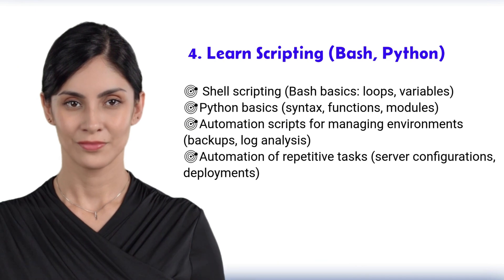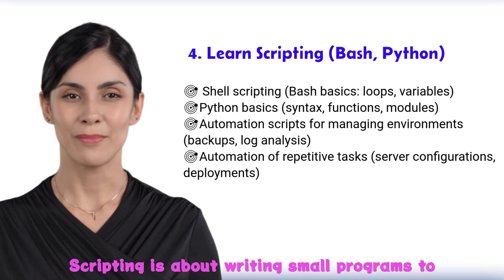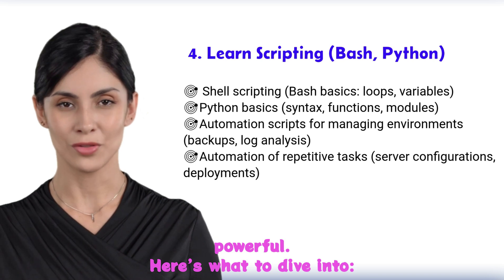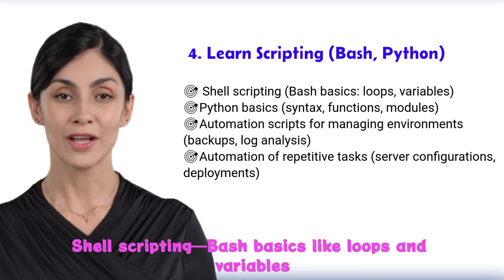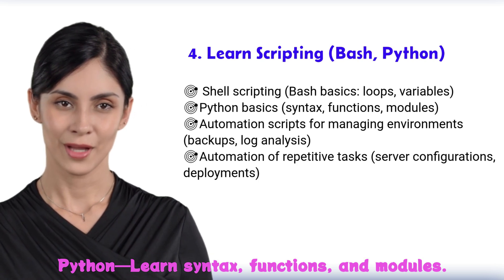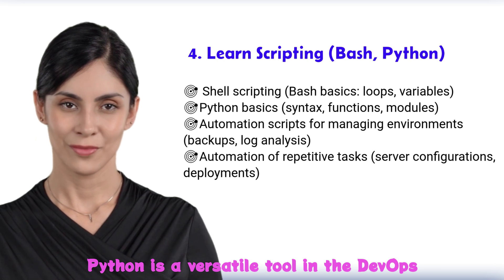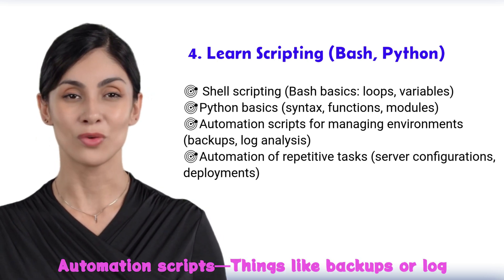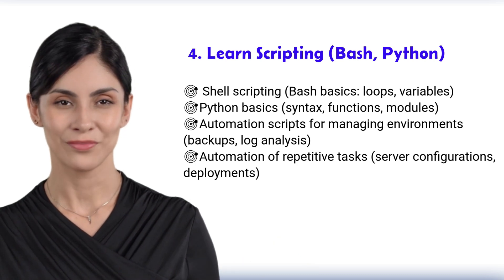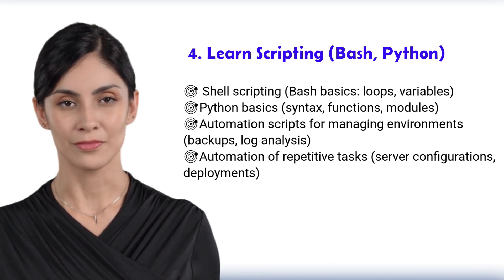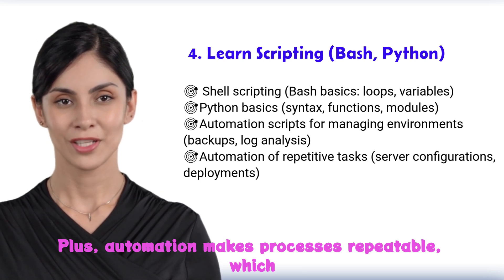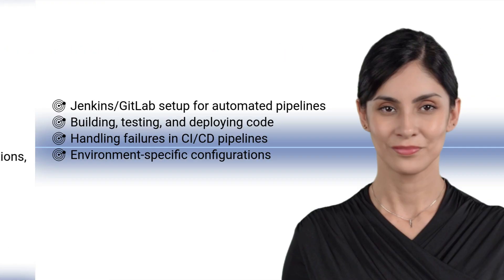Step 4: scripting. Scripting is about writing small programs to automate tasks, and this is where things get really powerful. Learn shell scripting — bash basics like loops and variables will help you automate tasks in Linux. With Python, learn syntax, functions, and modules — it's a versatile tool in the DevOps world. You'll also write automation scripts for things like backups or log analysis, and automate repetitive tasks like server configurations or deployments. Automation eliminates manual work and ensures consistency.